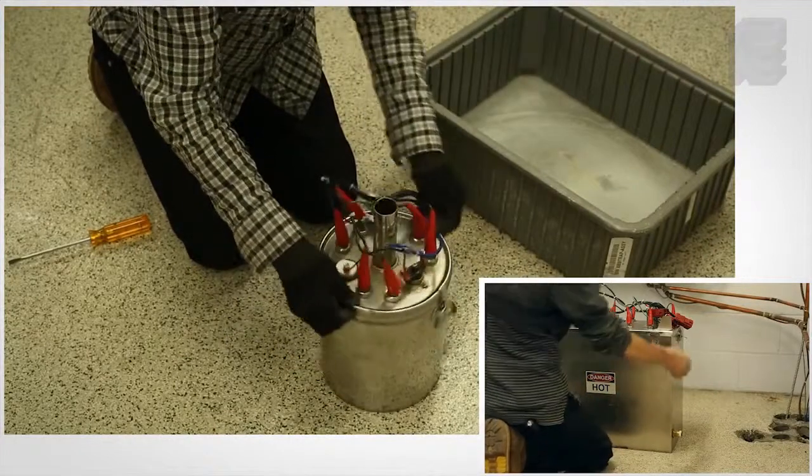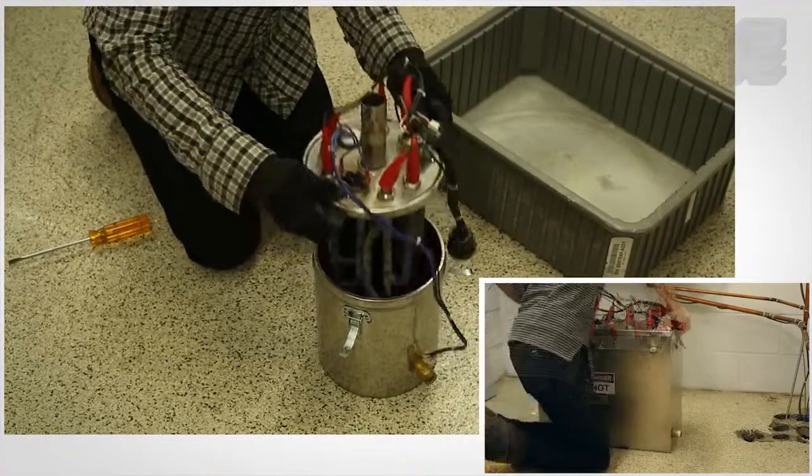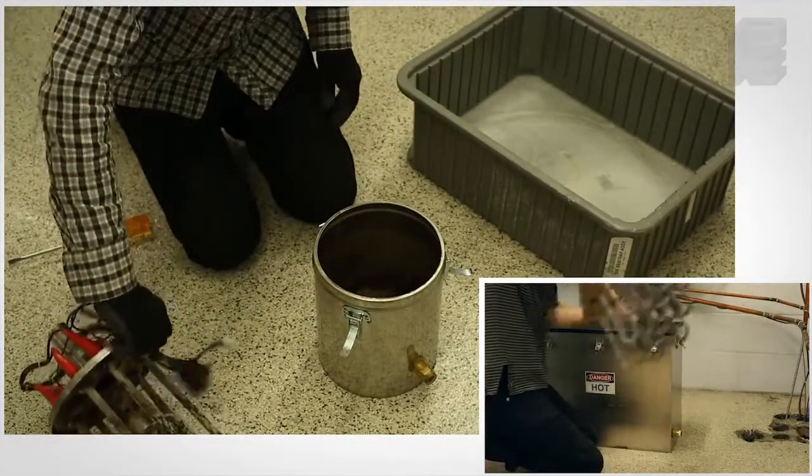Pour out the remaining water into a drain or sink close by. Undo the clamps that secure the chamber cover and remove the cover with the heating elements intact.